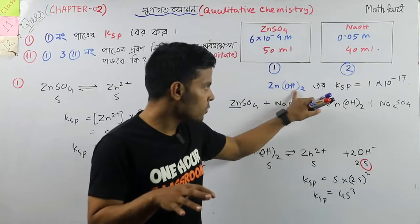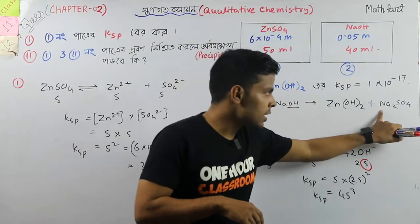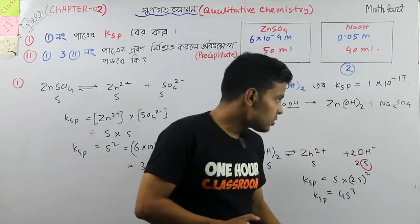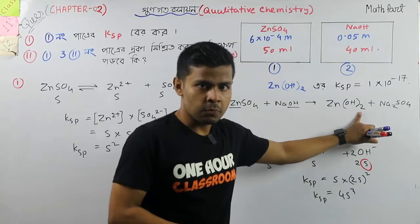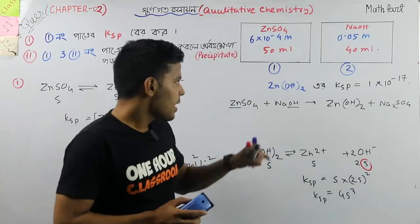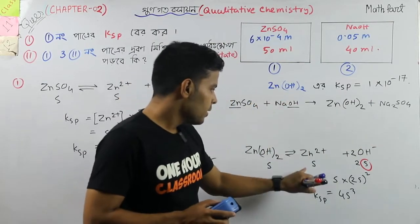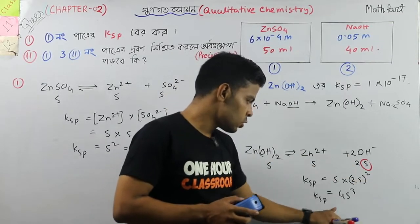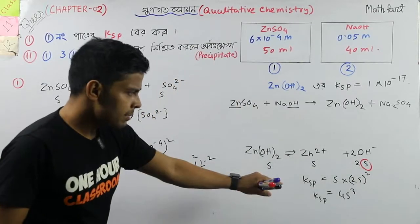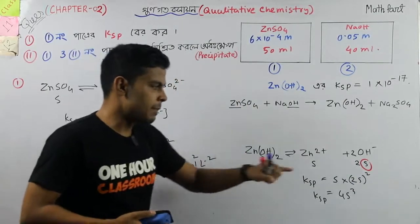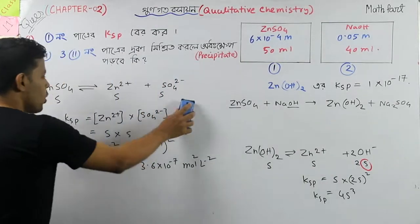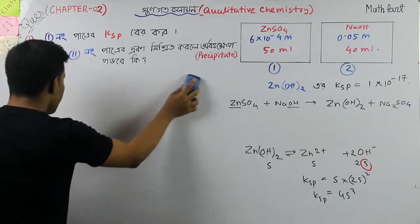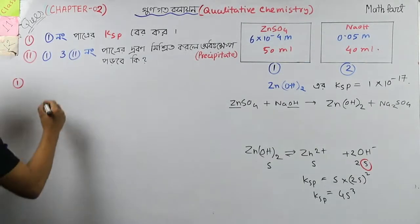Zinc hydroxide, zinc hydroxide, and sodium sulfate — do you know KSP? So do you know what the habit is? Tom, did you look at the cool book? Zinc hydroxide — what is the key number I will go over? KIP and zinc hydroxide — to know the KSP, it is S into 2S whole square, meaning 4S³.